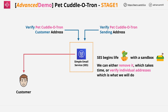In stage 1 of the mini-project, we'll be focusing on the Simple Email Service or SES configuration — the managed AWS service which lets us send email. When fully enabled, it allows you to send and receive email from within your applications, but to avoid spam, it starts off in sandbox mode.